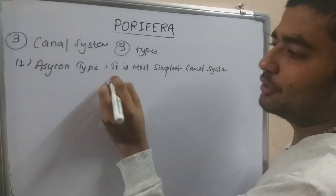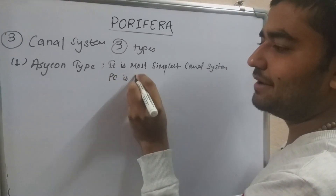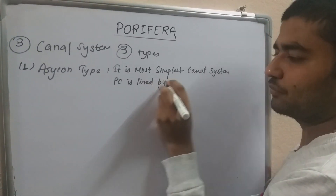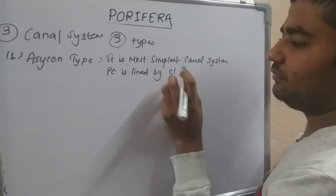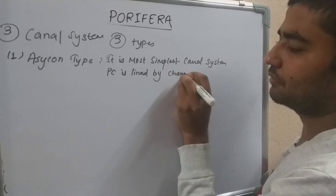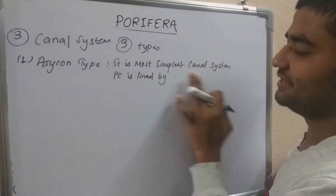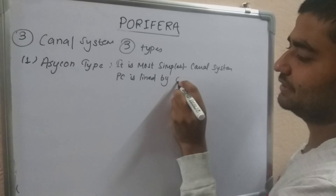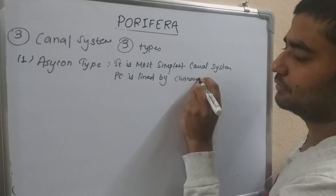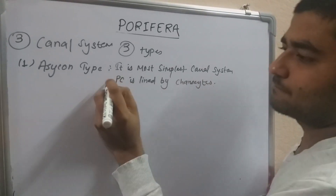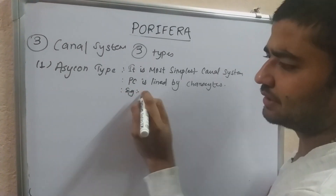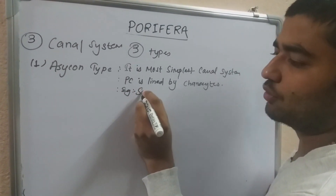In the Ascon type, the paragastric cavity is lined by Choanocytes (collar cells). For example, Leucosolenia is an example of the Ascon type.